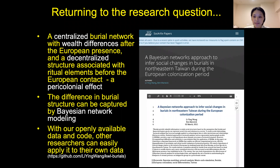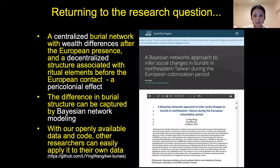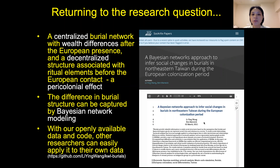Returning to my research question: can we identify changes from burials that reveal increased social differentiation? The answer is yes. We observe a centralized burial network with wealth differences after European presence. In contrast, for the pre-European period we see a decentralized structure with more subgroups associated with ritual practice. This indicates increased social differentiation that may be caused by a pericolonial effect. In this research we demonstrate how Bayesian network modeling can be used to test anthropological hypotheses and identify differences in burial structure.